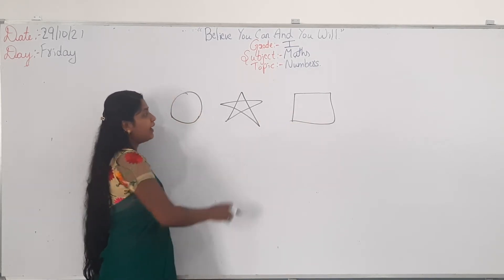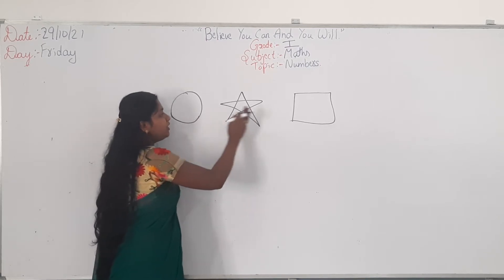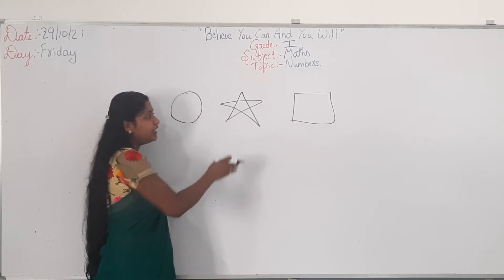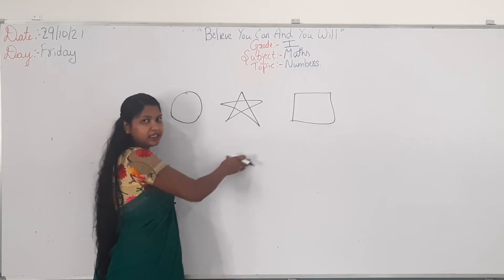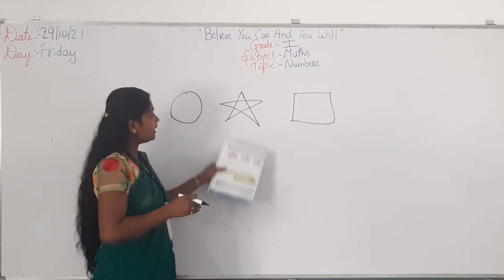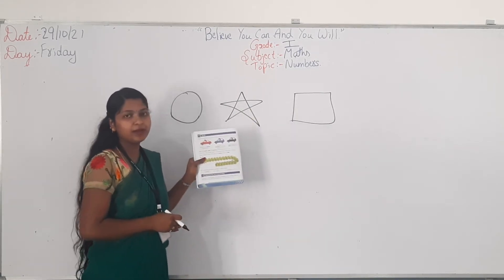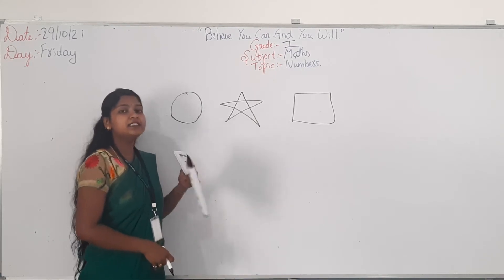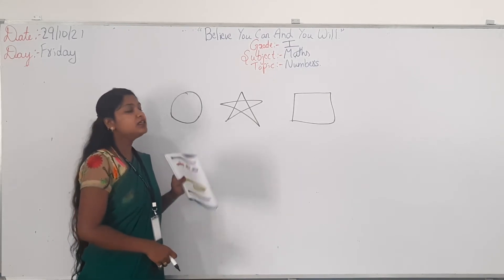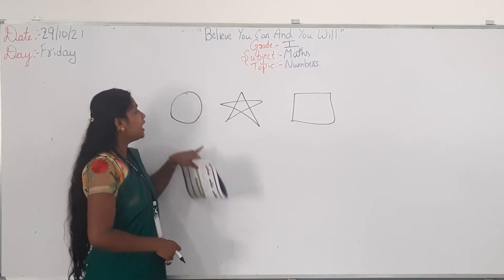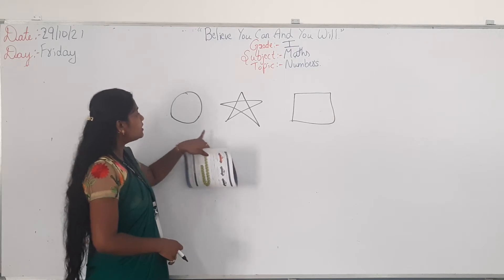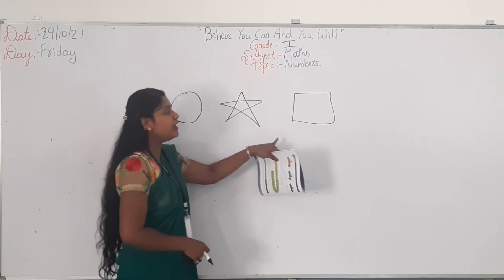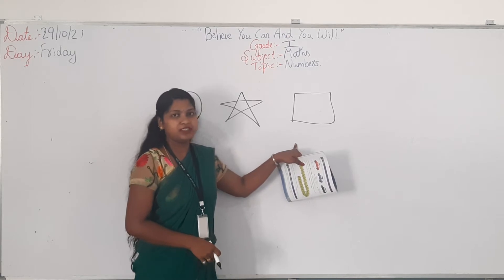The star is in between square and circle — it is in the center of the circle and square. So, it is also called as being between circle and square. The circle is before star and the square is after star.